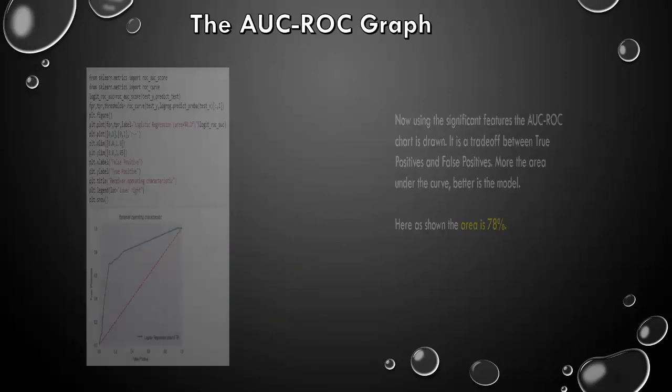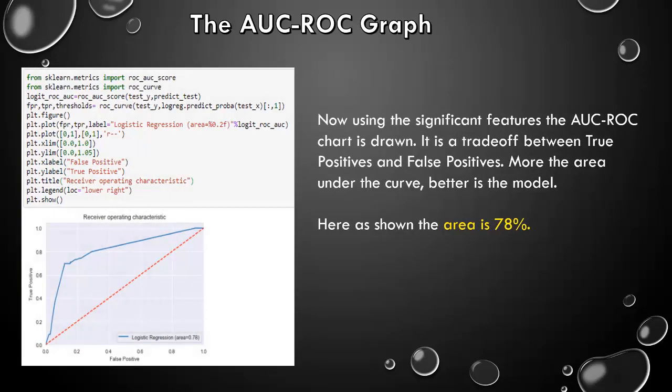The AUC-ROC graph. The AUC is the area under curve and ROC is the receiver operating characteristics. ROC is a trade-off between true positives and false positives. Using those significant features, we plotted this graph. More the area under this curve, that is the blue line as shown, better is the model. In our case, the area is 78%.